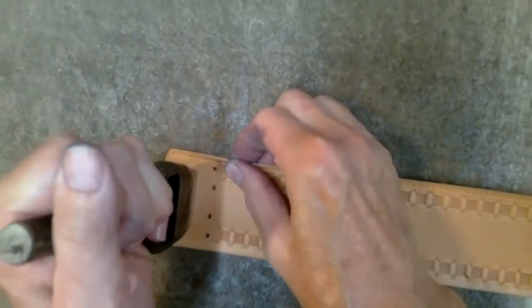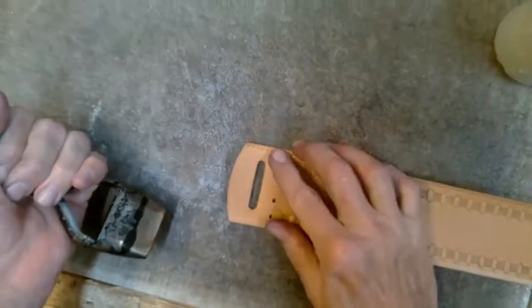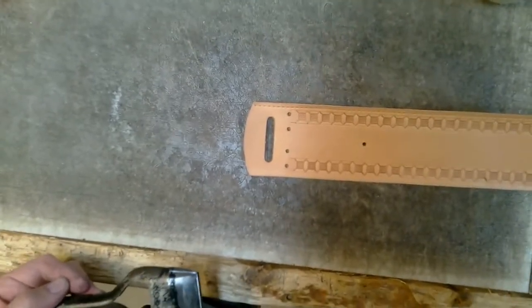On this project, I decided to punch out the billet slot on the back side of the money belt after the decorative stamping and before I'd sewn it.